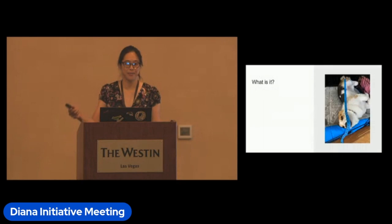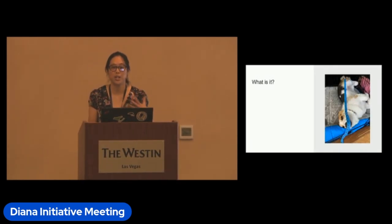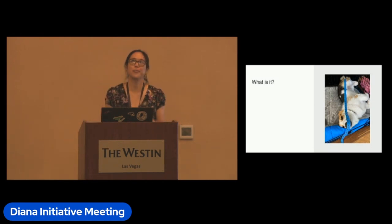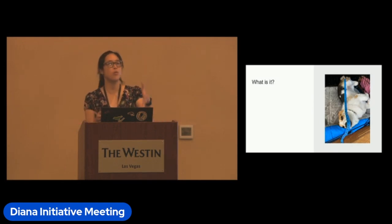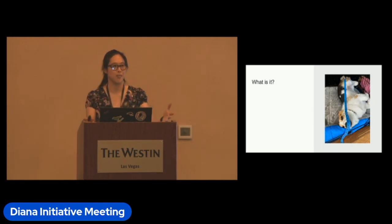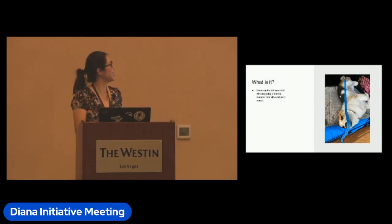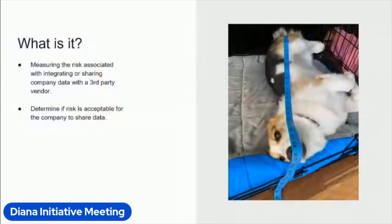So, vendor risk management — what is it? Essentially, we are measuring the risk associated with integrating or sharing company or organization data with a third-party vendor. Examples of third-party vendors are apps like Slack, services like AWS, GitHub. Essentially, if you don't work at those companies and you're sharing your data with them, they are a third-party vendor. After you've measured the risk, you will determine — or your organization will determine — if the risk is acceptable for the company to share data with.